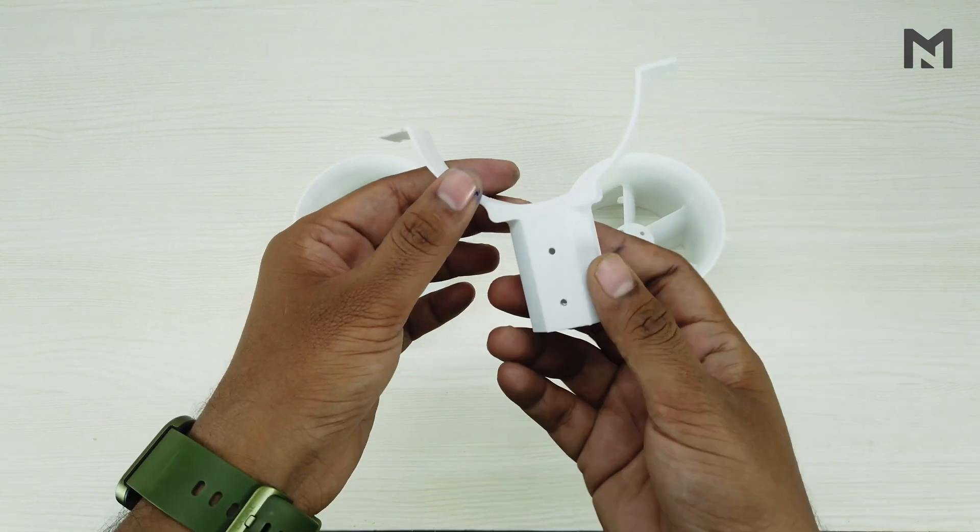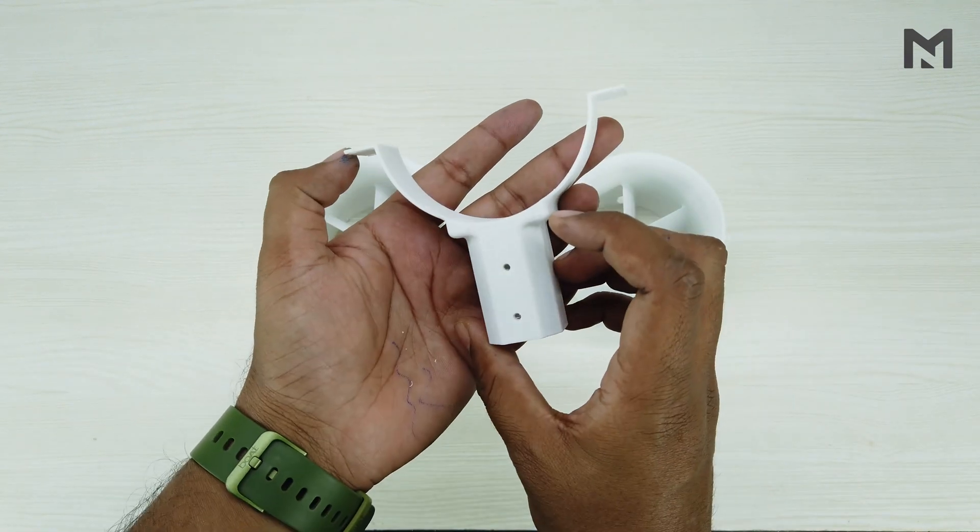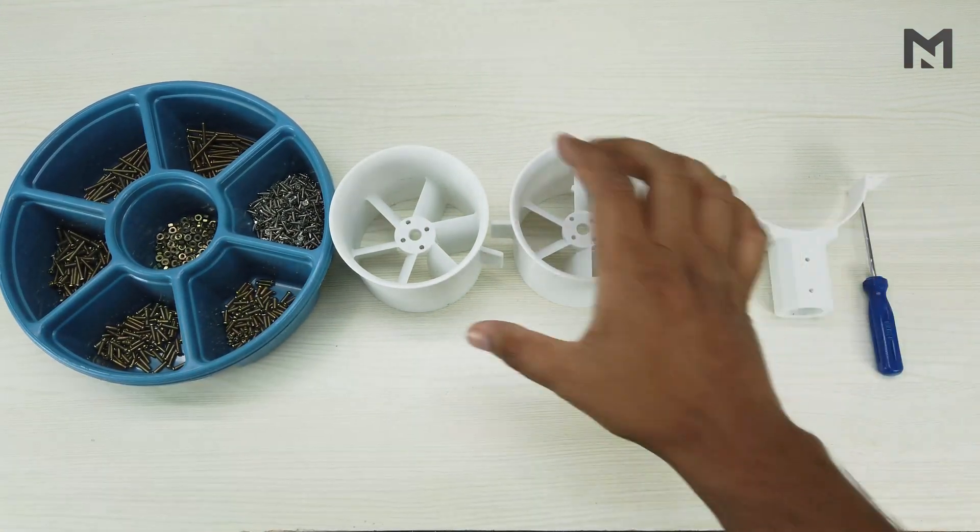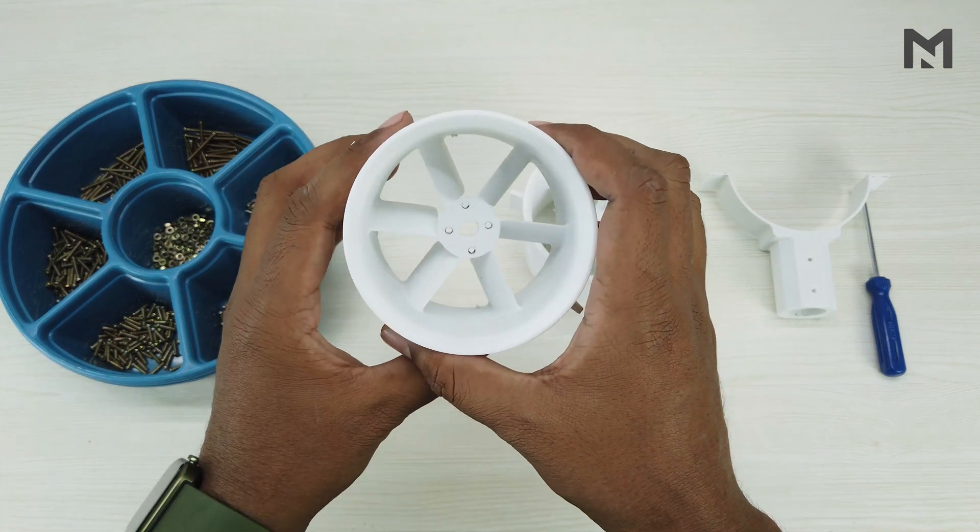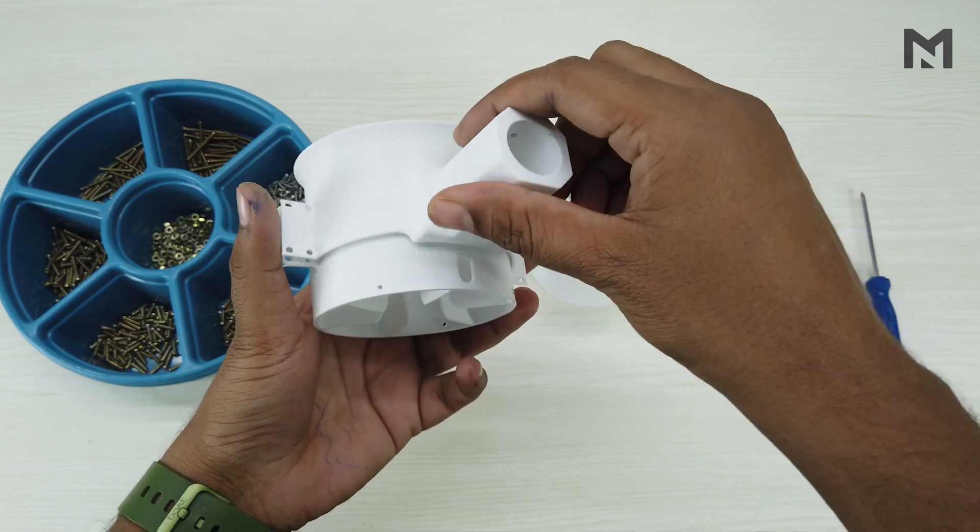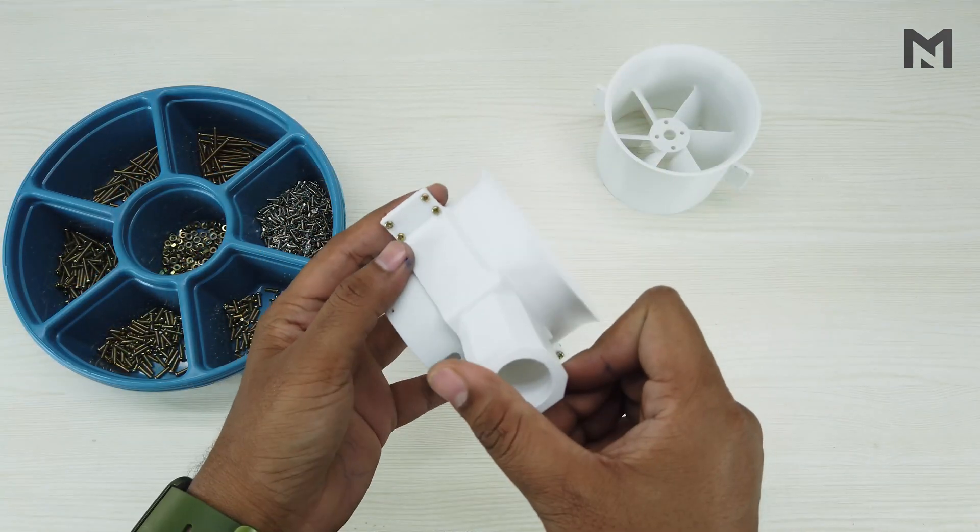This is the EDF holder which is used to fix the EDF to the test rig. Now we will compare both the casings for higher efficiency. First I will test the lower pitch casing. To secure it to its mount, use 8 screws of 8mm length and 2.5mm diameter.